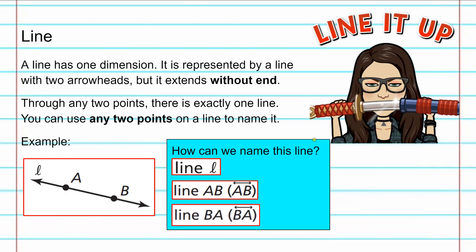Or you could use the opposite direction. You could also call it Line BA because a line extends infinitely in both directions.